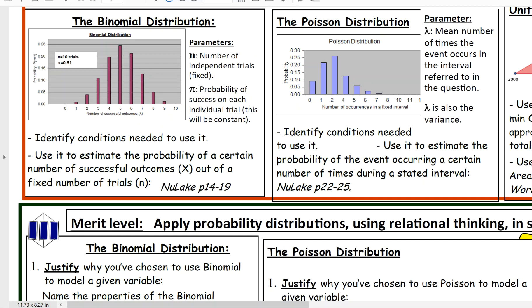What are the parameters of the binomial distribution? They are n, which is the number of independent trials, and pi, which is sometimes we call p, which is the probability of success on each individual trial.